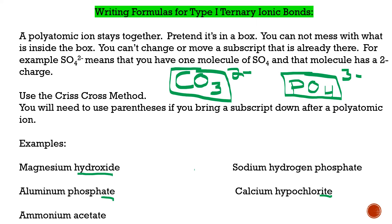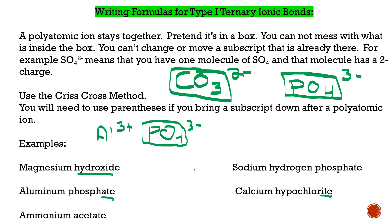The next example is aluminum phosphate. Aluminum has a 3+ charge. Phosphate ends in 'ate,' so we know it's a polyatomic — most polyatomics end in 'ate' or 'ite,' with a couple of exceptions like hydroxide and cyanide. Phosphate is PO4 with a 3− charge. Since we have 3+ on aluminum and 3− on phosphate, they cancel each other out. Our formula is simply AlPO4 — no parentheses needed because we didn't pull a subscript down.